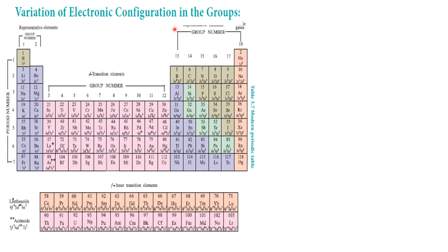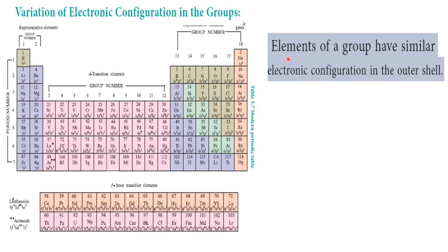Now let's look at the variation of electronic configuration in the groups. Groups go from top to bottom. The elements of a group have similar electronic configuration in their outermost shell. For example, in the boron group: boron is 2s2 2p1, aluminium is 3s2 3p1, gallium is 4s2 4p1. So the general electronic configuration of the boron group is ns2 np1. There are 18 groups listed in the periodic table.